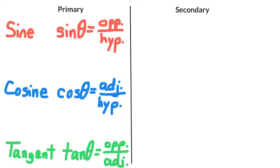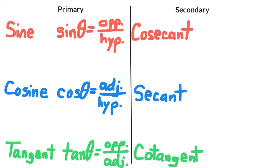There are also three secondary trigonometric ratios: the cosecant, the secant, and the cotangent. Here are their symbols.